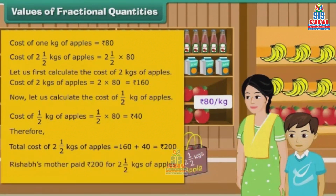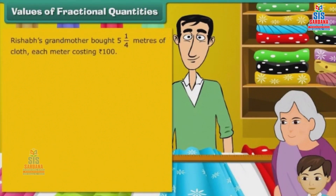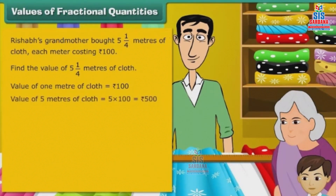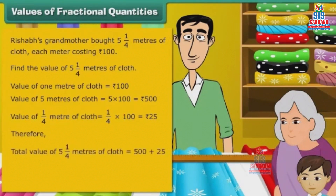Rishabh's mother paid Rs. 200 for 2.5 kgs of apples. Now look at another example. Rishabh's grandmother bought 5 and 1 by 4 meters of clothes, each meter costing Rs. 100. Find the value of 5 and 1 by 4 meters of clothes. Value of 1 meter of clothes is Rs. 100. Value of 5 meters is 5 multiplied by 100, which is equal to Rs. 500. Value of 1 by 4 meter is 1 by 4 multiplied by 100, which is equal to Rs. 25. Therefore, total value of 5 and 1 by 4 meters of clothes is Rs. 500 plus 25, which is equal to Rs. 525.